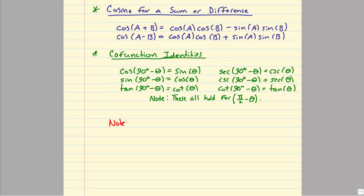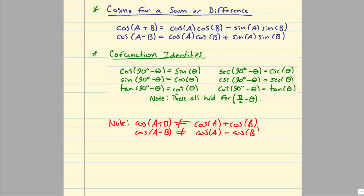I would like you to be aware of a couple things. The cosine of a plus b, where a and b are some angles in degrees or radians, does not equal—and I cannot emphasize this enough—cosine a plus cosine b. You cannot distribute the cosine through the sum or the difference. This is the same for the difference as well: cosine(a-b) does not equal cosine(a) minus cosine(b). And if you have trouble working with radians, you can convert everything to degrees.